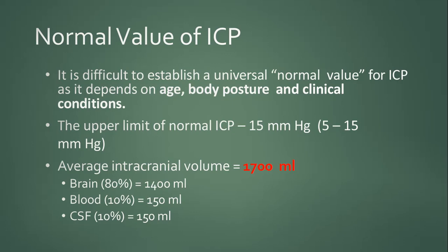What is the normal value of intracranial pressure? It is difficult to establish a universal normal value for ICP because there are variations in age, body posture, and clinical condition of patients. The accepted range is 5 to 15 millimeters of mercury, with the upper limit being 15 mmHg.